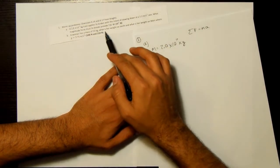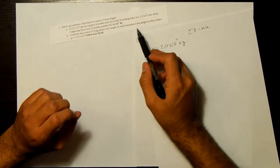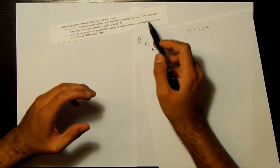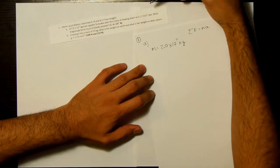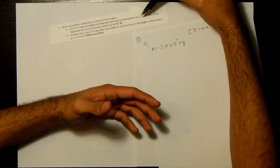And then it says that it needs to slow down at a rate of 1.2 meters per second squared. So that's the acceleration. Even though it doesn't say acceleration, you can tell by the units and just by what it means to slow down.